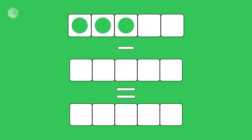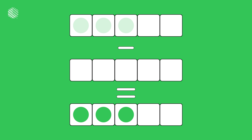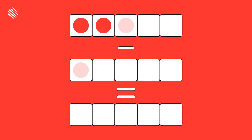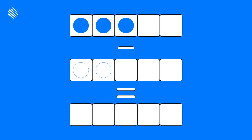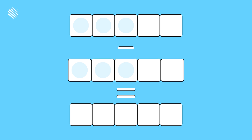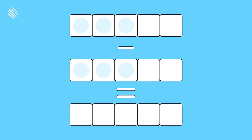3 minus 0 equals 3. 3 minus 1 equals 2. 3 minus 2 equals 1. 3 minus 3 equals 0.